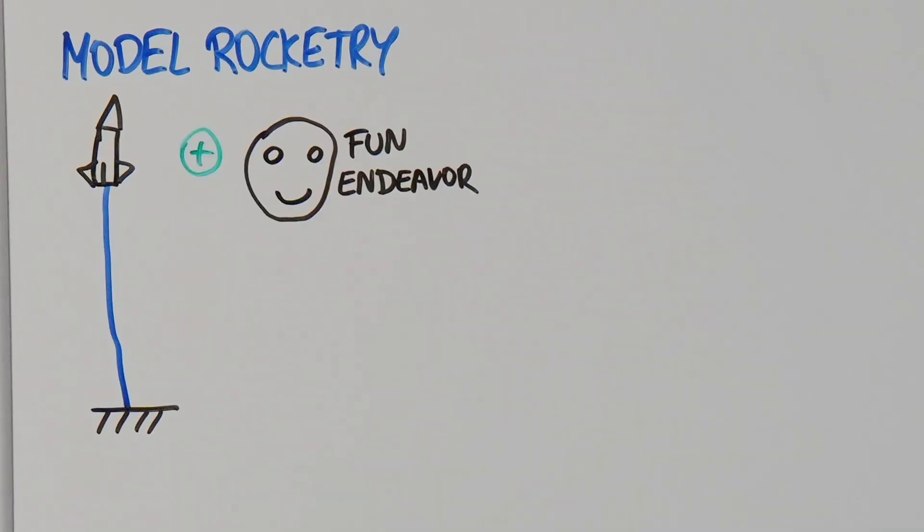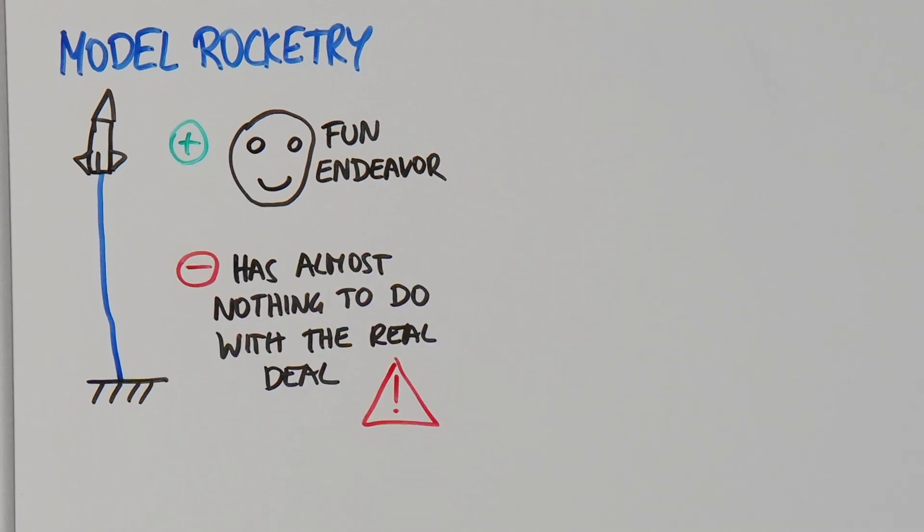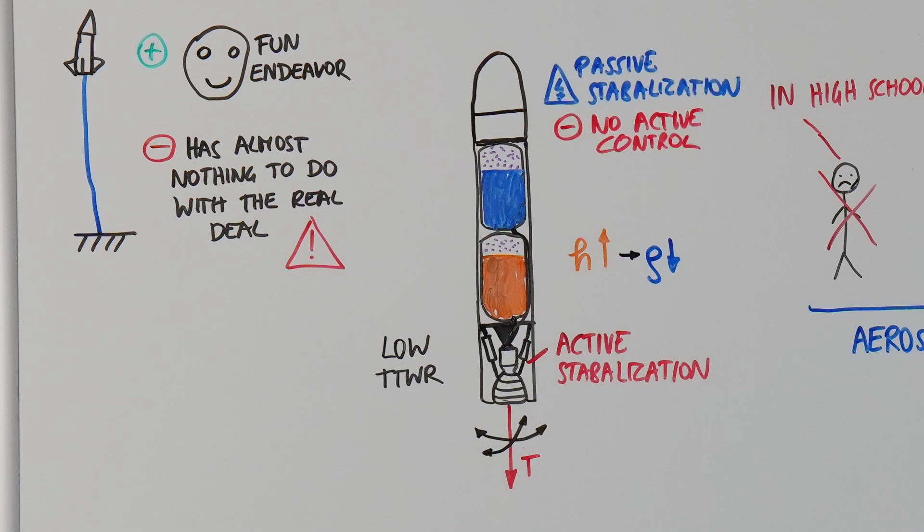Conventional model rocketry is a fun endeavor and relatively easy to do. However, it has almost nothing to do with the real deal. Real rockets never solely rely on passive stabilization, as the thrust-to-weight ratio is comparably low at the beginning of the flight. Further, passive stabilization ceases to work in the upper layers of the atmosphere as the air density decreases, and it allows for no active control.